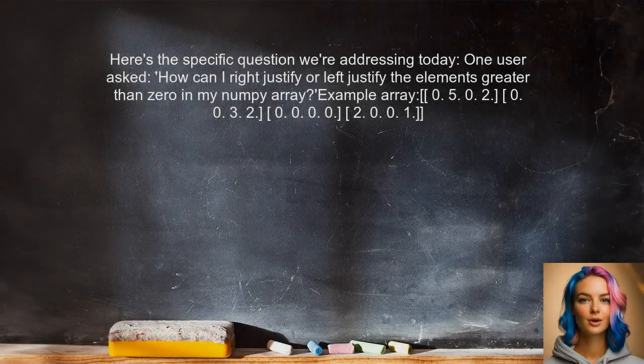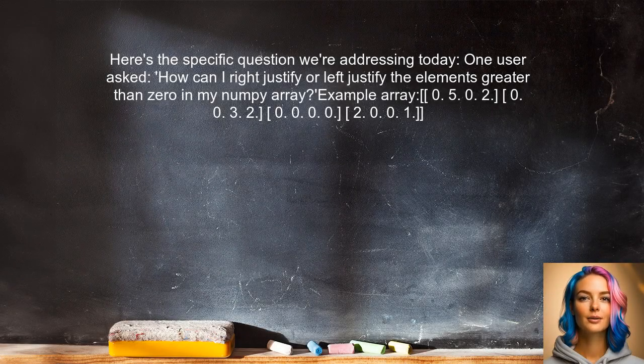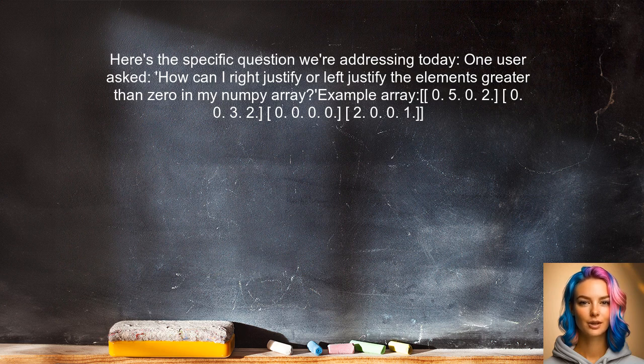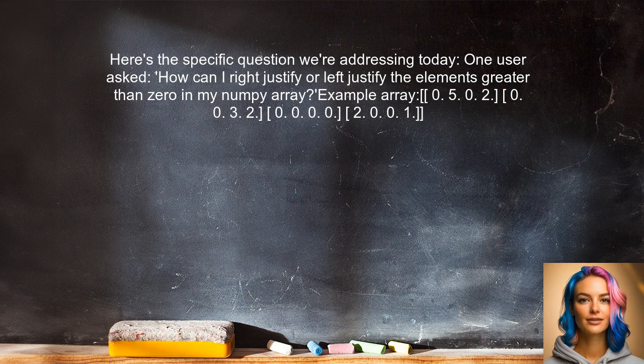Here's the specific question we're addressing today. One user asked, how can I right justify or left justify the elements greater than zero in my NumPy array? They provided an example array and it looks like this. Let's dive into this together and find a solution.